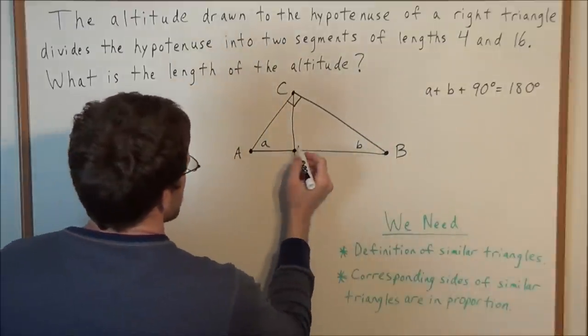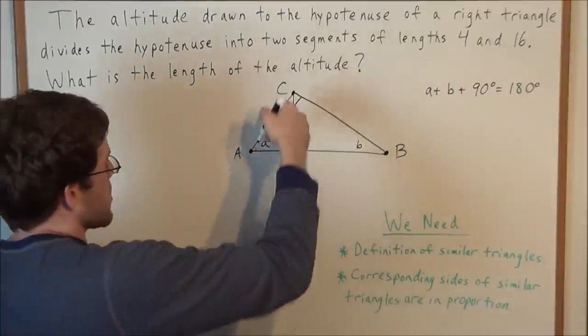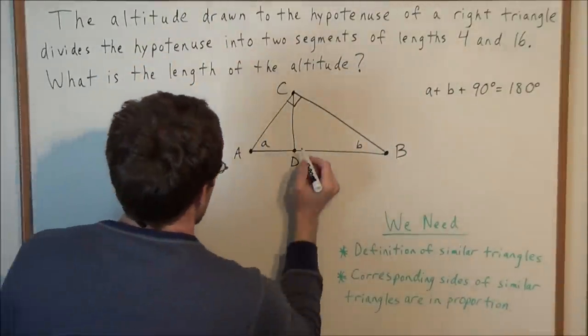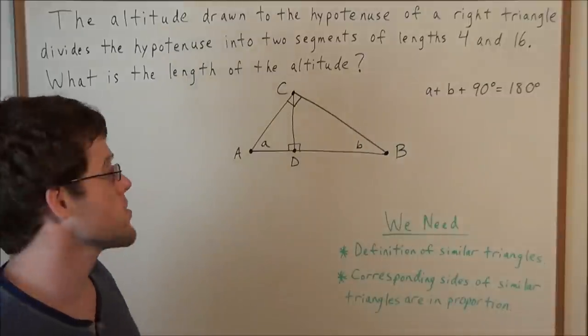And when it intersects AB, we'll say that it intersects AB at point D. This altitude CD is going to be perpendicular to side AB. That's by definition of an altitude.